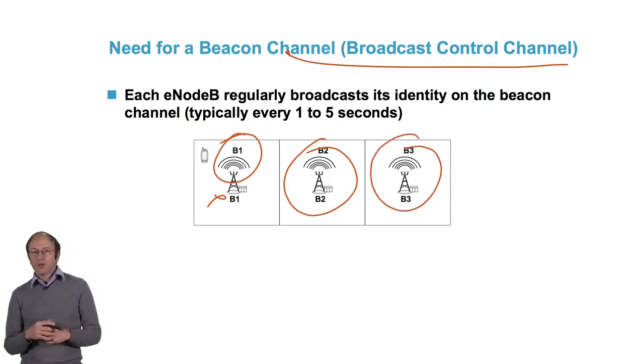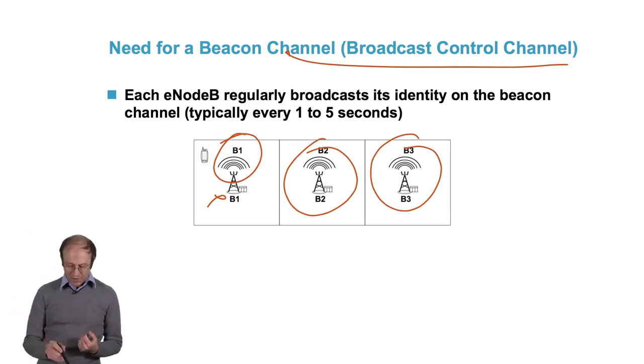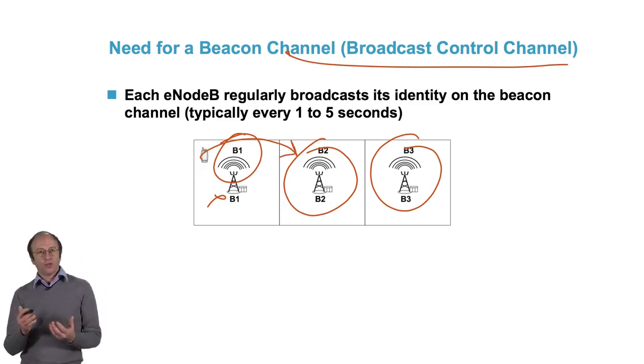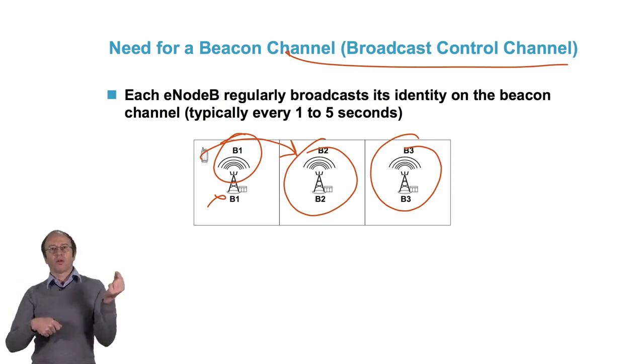This way, a cell phone that goes from one cell to another just needs to listen to the beacon channels. When it receives a signal from B2 stronger than from B1, that indicates it has changed cells.